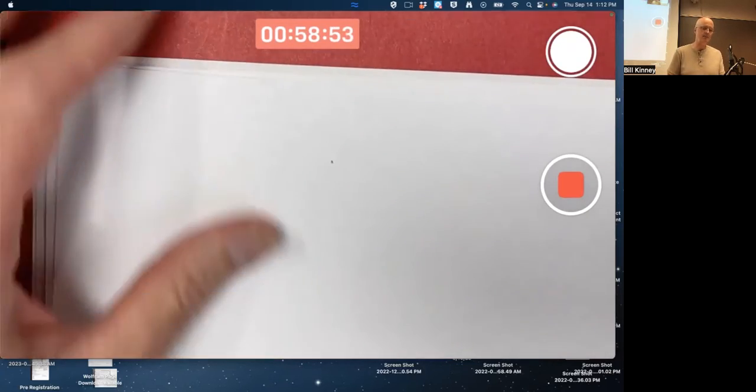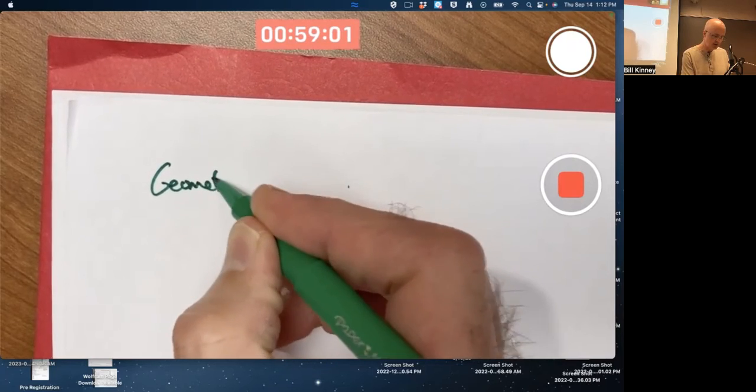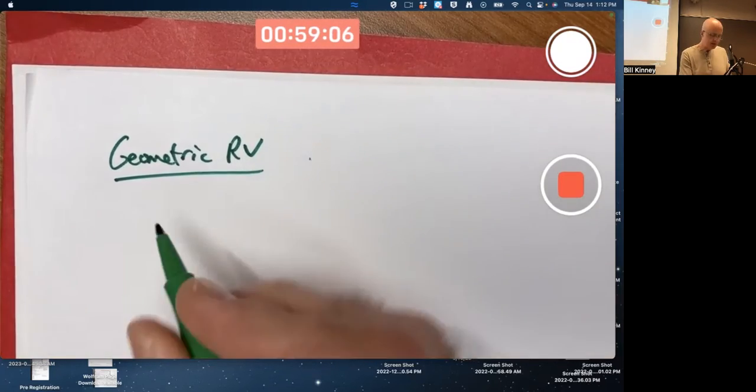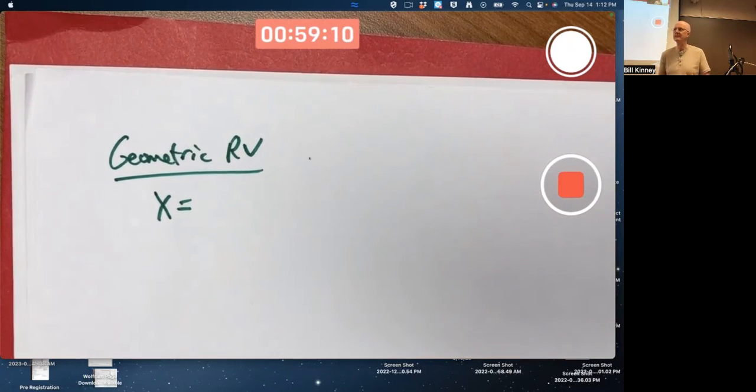Let's do geometric first. That comes first in the book. Geometric random variable, typically thought of as being the number of trials until the first success.